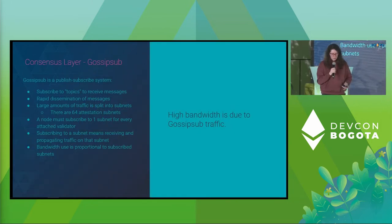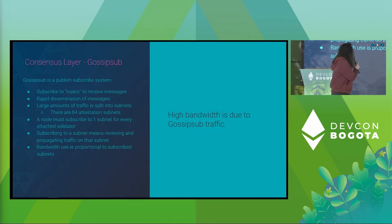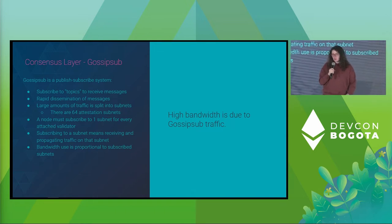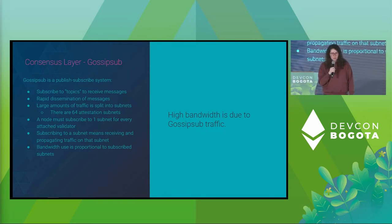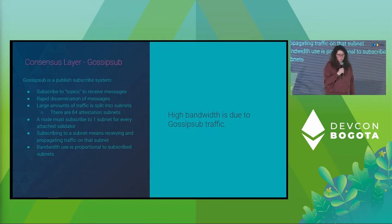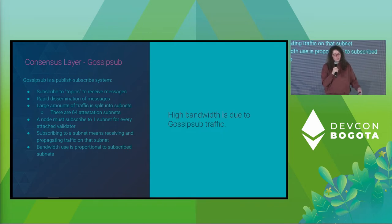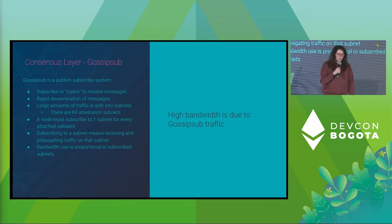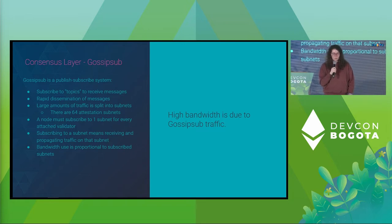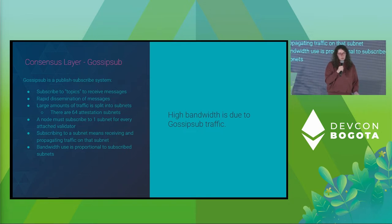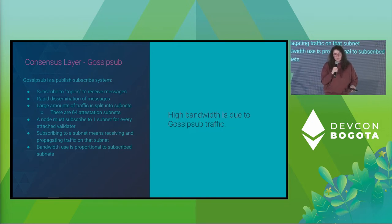We have GossipSub and request-response — we're going to focus on GossipSub. GossipSub is a publish-subscribe protocol. We publish messages to the network, those get disseminated to other peers, and we receive messages on subnets or topics to which we are subscribed. We have large amounts of data, and those we split between subnets — here we have 64 attestation subnets. We need to think about how many subnets we are subscribed to, since this is the reason why we get so much bandwidth. Right now, each beacon node is subscribing to one subnet for each validator it has attached.